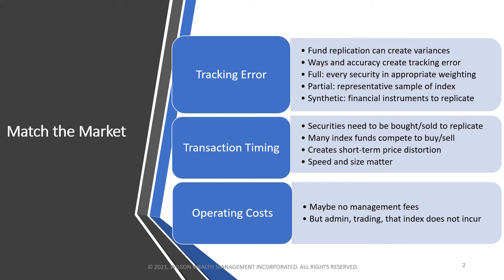The first thing we look at with passive investing is that we want to match the market, and that market could be a broad index like the S&P 500. It could be a global market — the world as a whole — or it could be small cap U.S. equities, high yield bonds. So you can go from global indices all the way down to individual sectors.